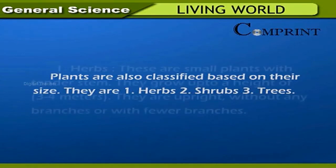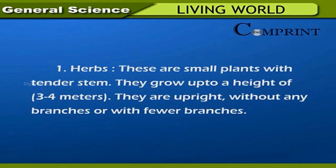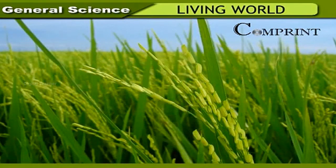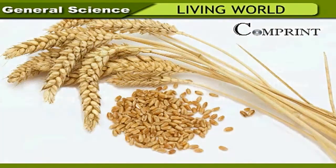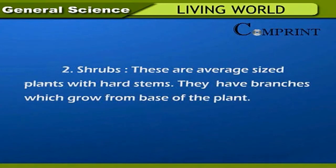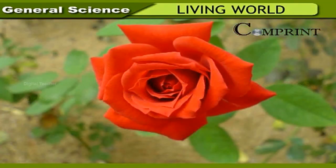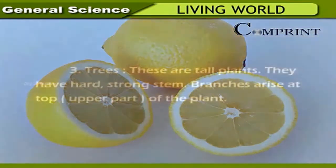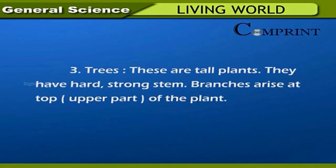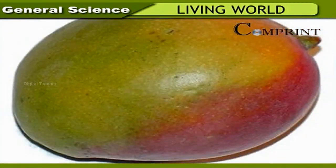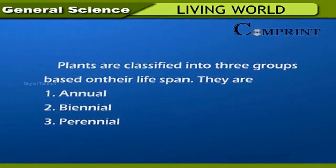Herbs are small plants with tender stems, growing up to a height of three to four meters, upright with no or few branches — examples include paddy, wheat, mustard, brinjal, and ladies finger. Shrubs are average-sized plants with hard stems and branches growing from the base — examples include rose, jasmine, and lemon. Trees are tall plants with a hard, strong stem, and branches arise at the top — examples include mango, neem, and tamarind.